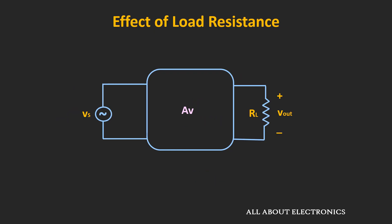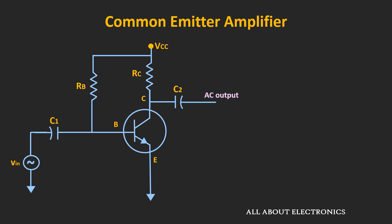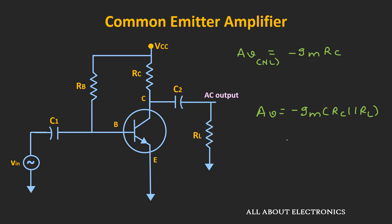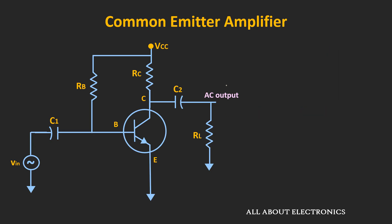Similarly, when we connect a load to the amplifier, it will also have an effect on the overall voltage gain. For the common emitter amplifier, the no-load voltage gain is −gm × Rc. When we connect an external load, the voltage gain becomes −gm × (Rc ∥ Rl), that is −gm × (Rc × Rl) / (Rc + Rl). This minus gm times Rc is the no-load voltage gain, so the overall voltage gain equals the no-load voltage gain times Rl / (Rc + Rl).